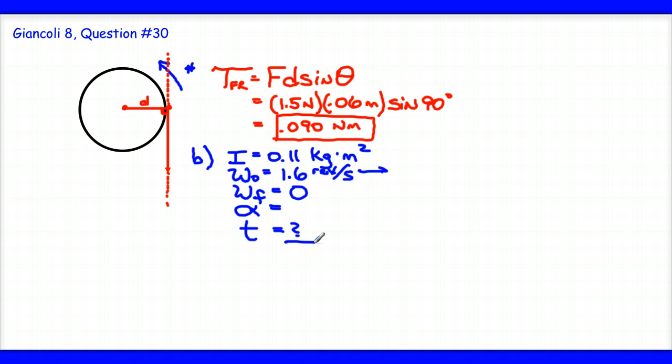We can figure out the angular acceleration by using Newton's second law for rotational dynamics. Torque is equal to I alpha, where we basically have the torque. We just figured it out here in part A. And the moment of inertia is given to us in the problem. So I can say then that the torque over the moment of inertia is going to be equal to our angular acceleration.